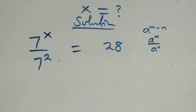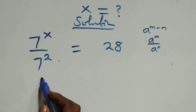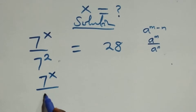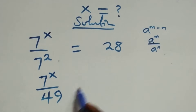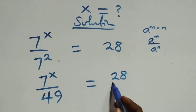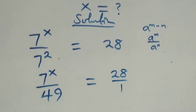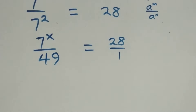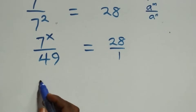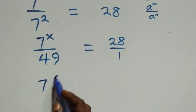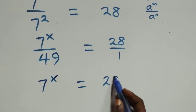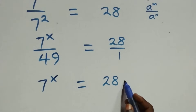We can write this as 7 raised to power x over 7 squared, that is 49, then equals 28 over 1. Next we cross multiply: 7 raised to power x times 1, which is just 7 raised to power x, equals 28 times 49.